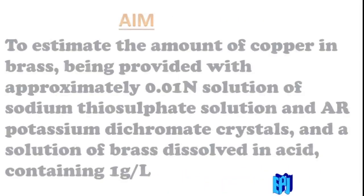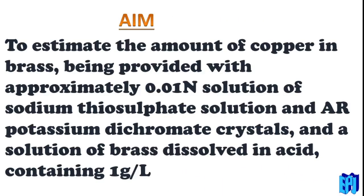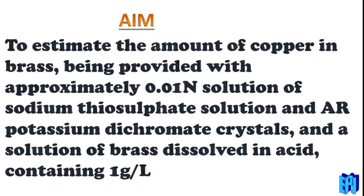The aim of the experiment is to estimate the amount of copper in brass, provided with approximately 0.01 normal solution of sodium thiosulphate, AR potassium dichromate crystals as standard salt, and a solution of brass dissolved in acid containing 1 gram per liter. From this aim it is clear that the titrant is sodium thiosulphate and anhydrous potassium dichromate crystal is the standard salt.